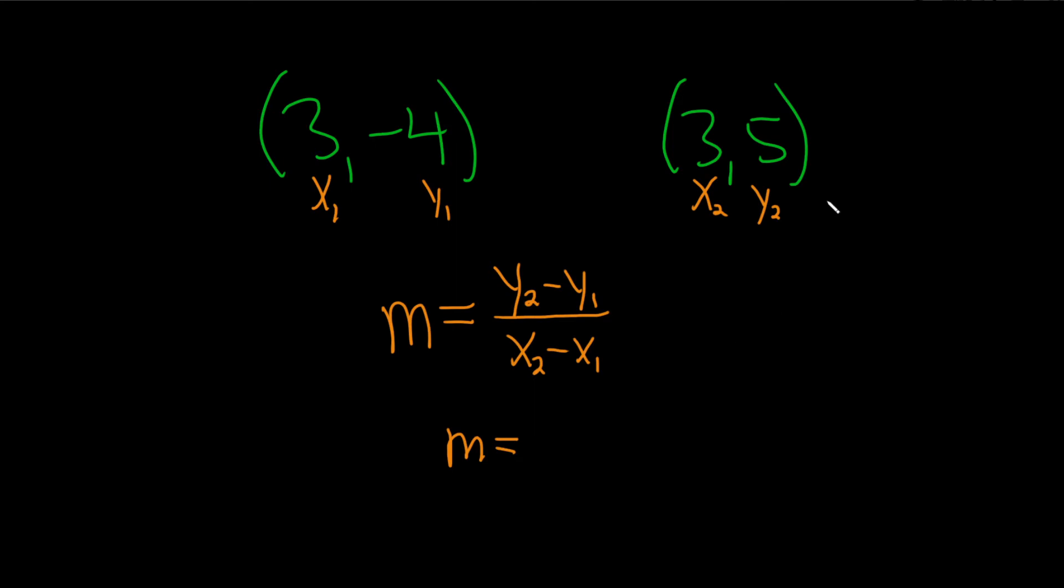Let's see. So y2 is 5, that'll be our first number. So 5 minus, and then y1 is negative 4. So this will be a negative 4 right there.